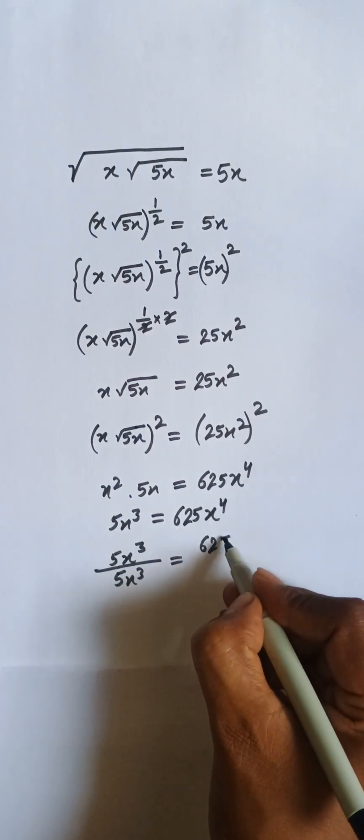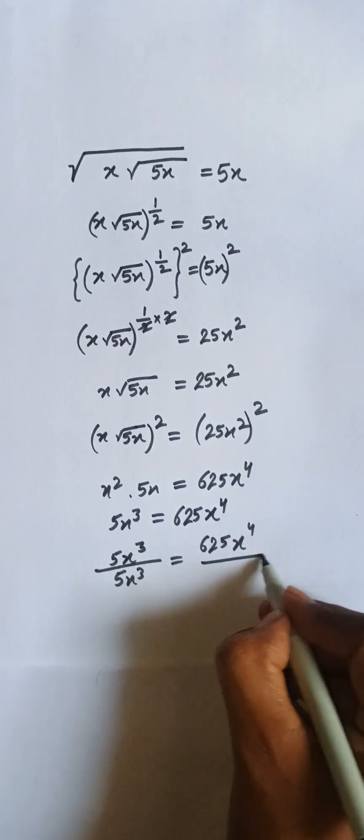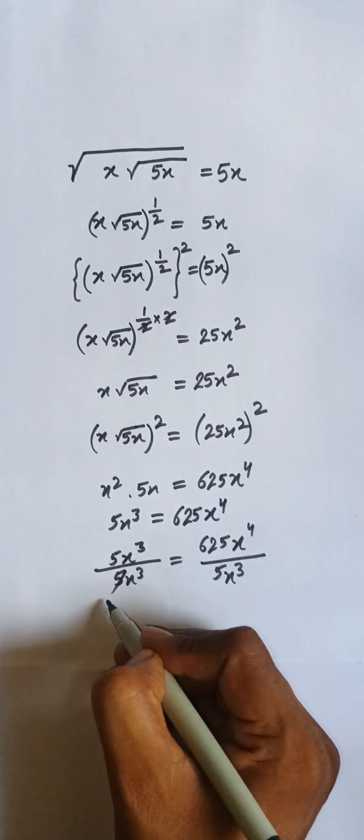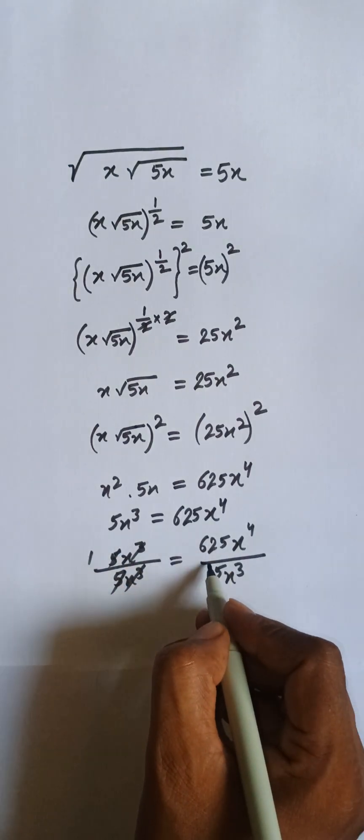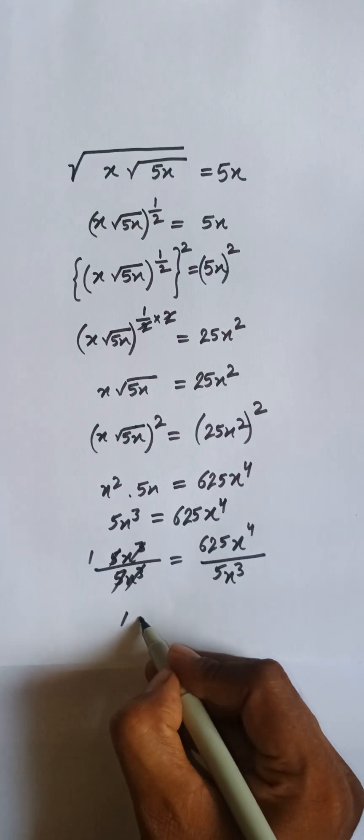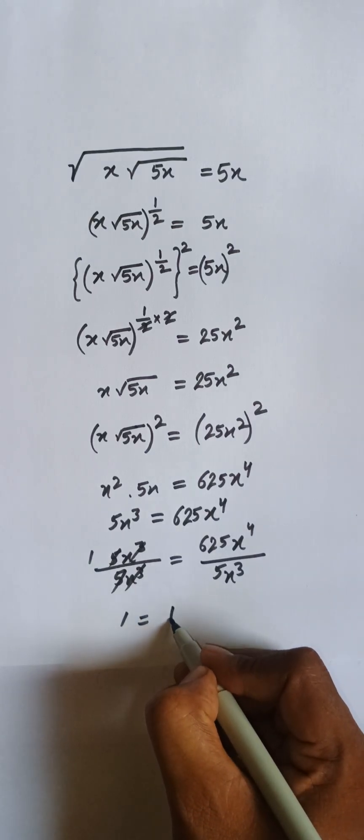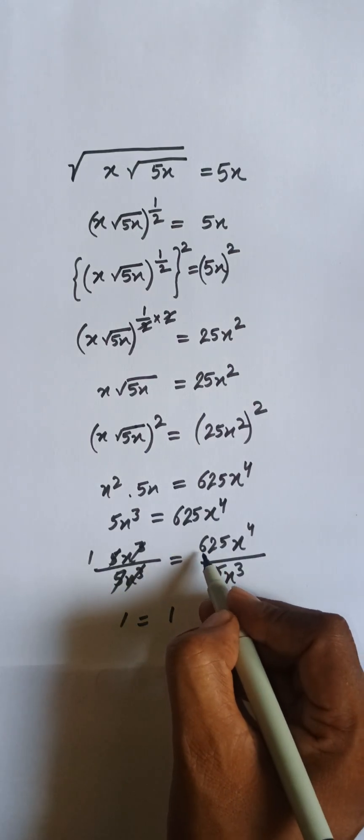and here 625x⁴ divided by 5x³. This one cancelled, this is cancelled, so we have 1. We can say that 1 is equal to